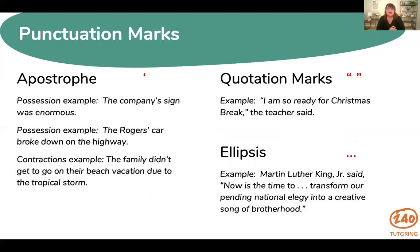Our last punctuation marks: first, the apostrophe, which is used to show possession or in a contraction. For possession: the company's sign was enormous — apostrophe S shows the company owns the sign. For a name already ending in S: the Rogers' car broke down on the highway — we just add the apostrophe without another S, since adding S would sound like 'the Rogers's.' For contractions: the family didn't get to go on their beach vacation due to the tropical storm — we combined 'did not' with an apostrophe.